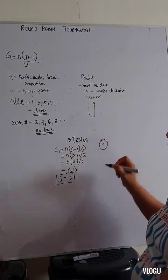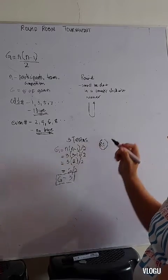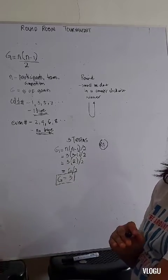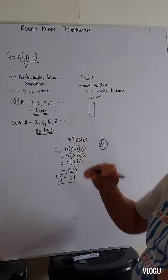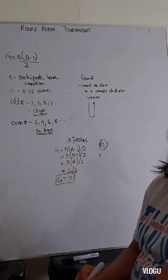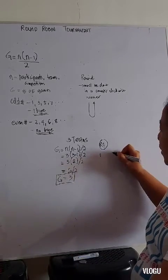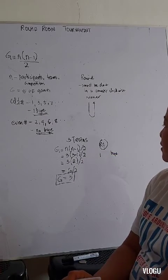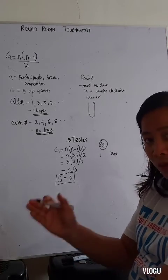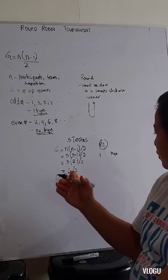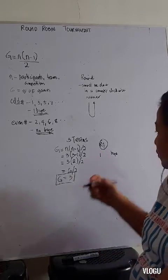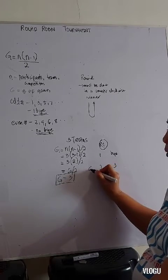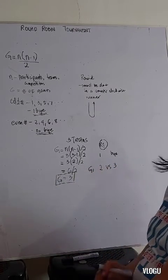So let's proceed to round 1. This is how we place it in a counterclockwise manner. The opposite of team 1, if it's odd in number, is buy. Meaning our team 1 cannot play in the first round. So team 1 will be waiting for the second round. 2, 3. So this is our game 1, 2 versus 3.